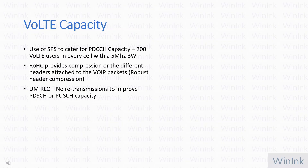PDCCH, PDSCH, and PUSCH are all limiting factors for Voice over LTE capacity. Robust header compression compresses the headers of IP packets, reducing the number of bits transferred over the air interface and improving air interface capacity. Unacknowledged mode RLC can also be applied to remove retransmissions and hence reduce the number of bits transmitted over the interface. Note that RLC configuration can be done on a per-bearer basis in LTE, allowing further optimization.